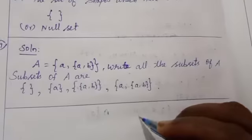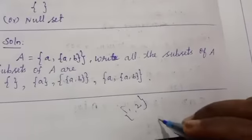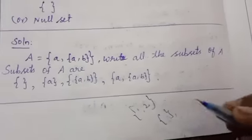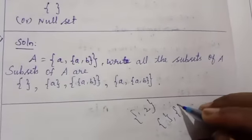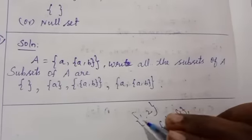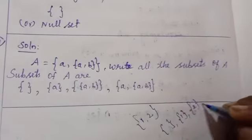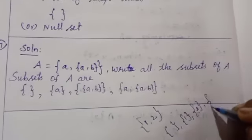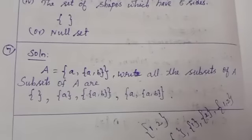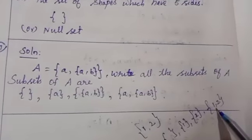Suppose you have {1, 2} — write the subsets. First empty set. Then single elements: {1}, then {2}. Next, 2-element subset: {1, 2}. Totally, how many? 1, 2, 3, 4 — four subsets.